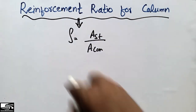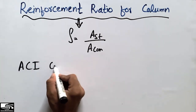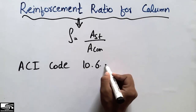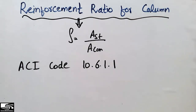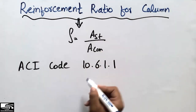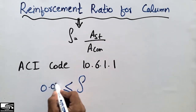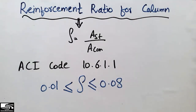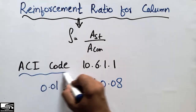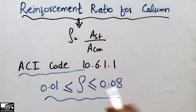So what is the reinforcement ratio for the column? According to the ACI code — the American Concrete Institute code 10.6.1.1 — it states that the reinforcement ratio for the longitudinal bars of the column should not be less than 0.01 and should not be greater than 0.08. This ACI code states that the reinforcement ratio must be within this range.